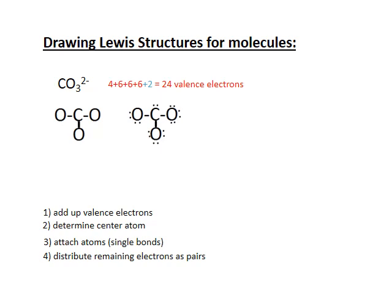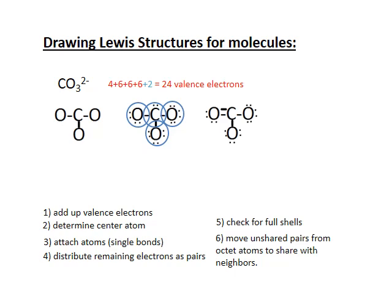After attaching the oxygens and distributing remaining electrons, all but one atom achieves an octet. That one oxygen without an octet is connected to carbon, which has an octet, so a pair can be slid from carbon into a shared position with that oxygen, creating a double bond. After this step, every atom has an octet and the process is complete.